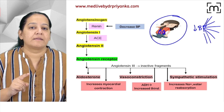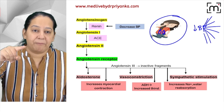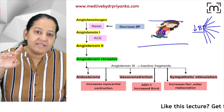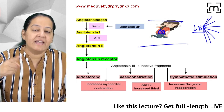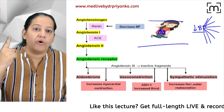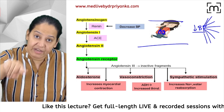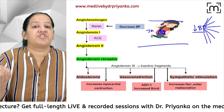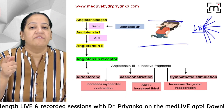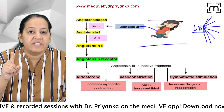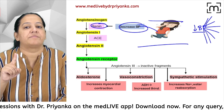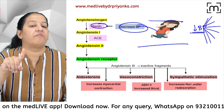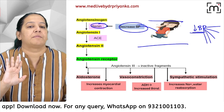As soon as my BP falls, there is a sensor in the kidney — inside the nephron, inside the glomerulus, inside the afferent arteriole. The name of that sensor is the JG (juxtaglomerular) apparatus. That JG apparatus will secrete renin into my blood. This is how renin enters the blood when BP falls.